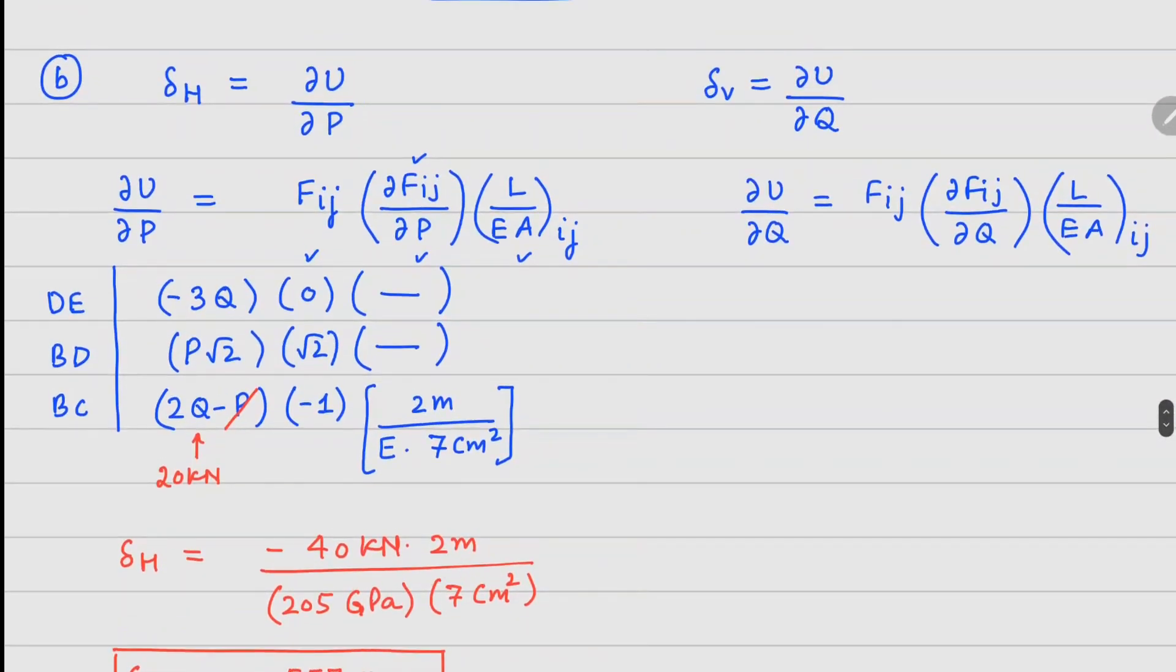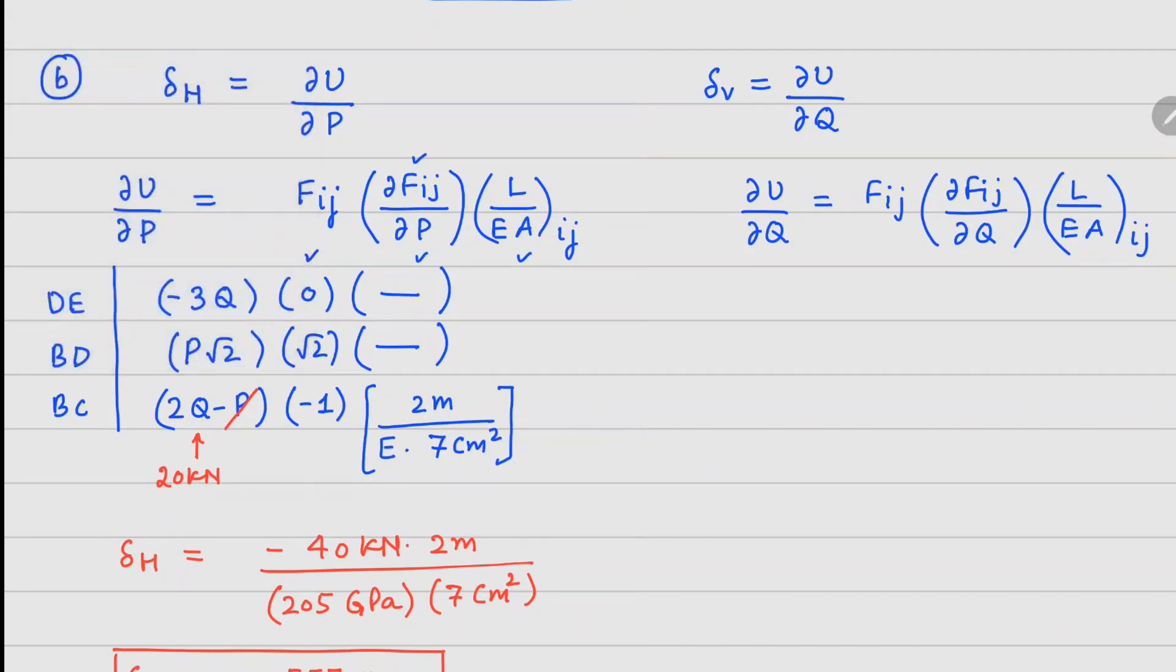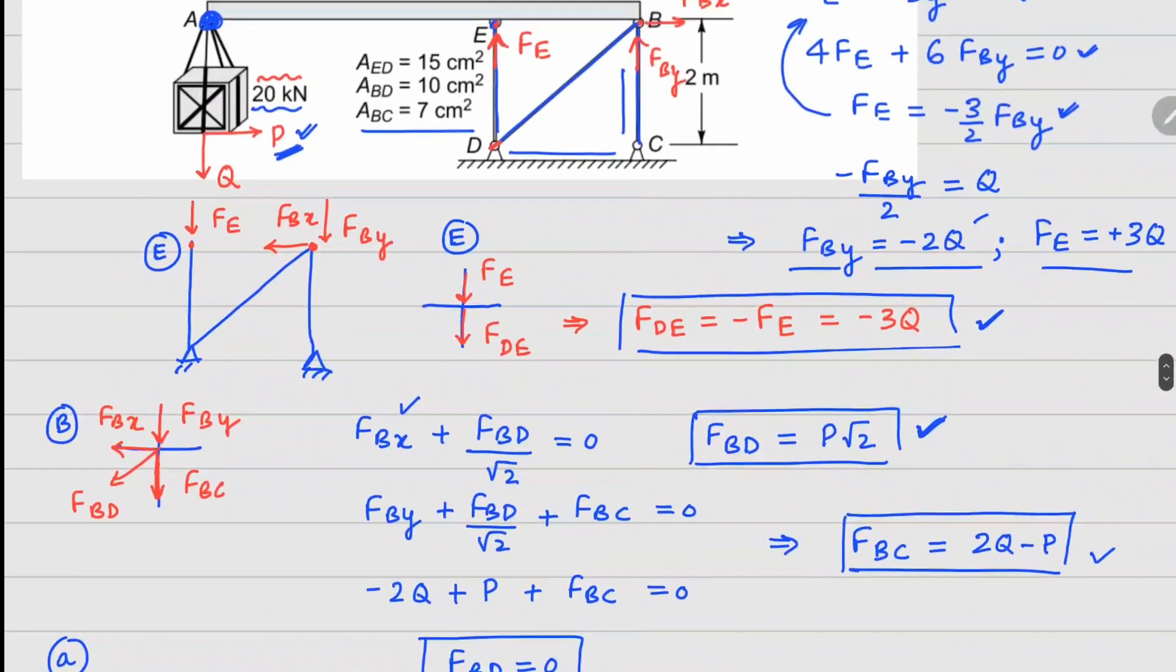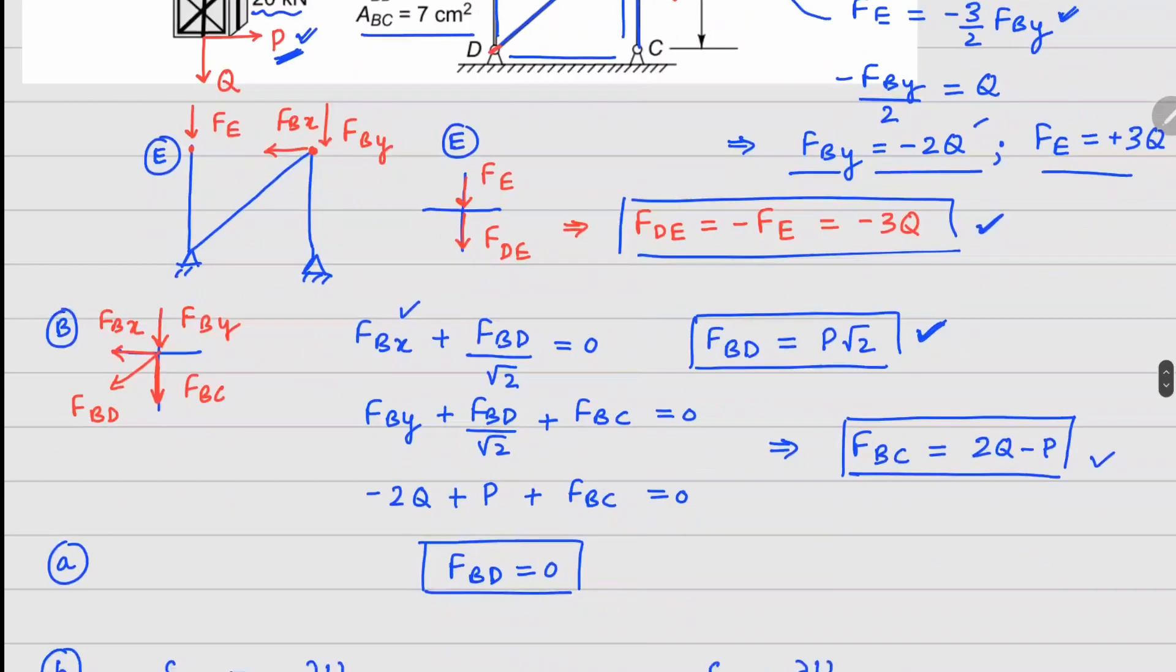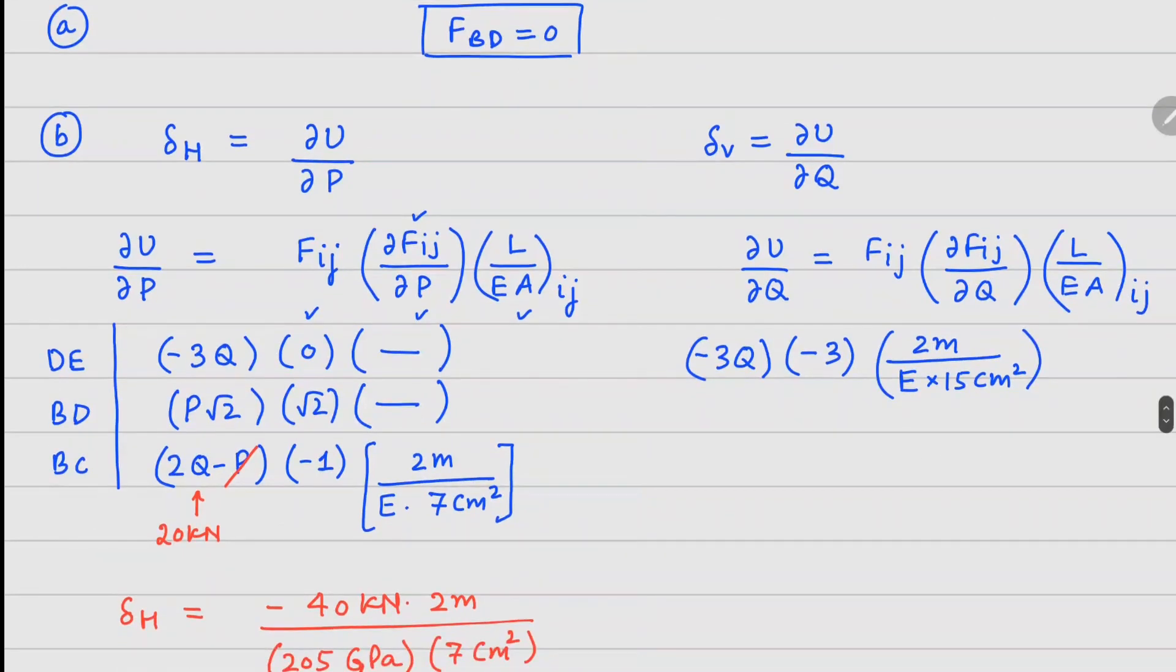In a similar manner, for the vertical deflection, we can repeat this process. Force is minus 3Q, derivative with respect to Q is minus 3. Your DE member is 2 meters height, elastic modulus E, and for DE the area is given as 15 centimeter square.